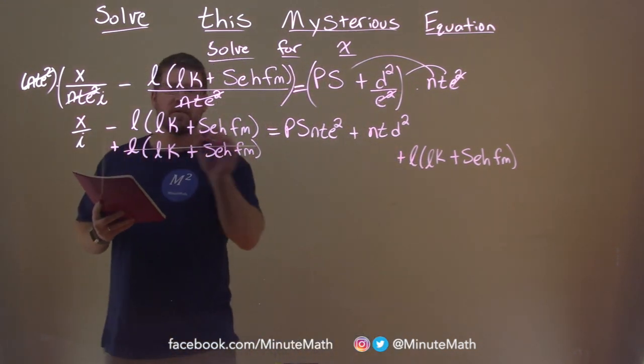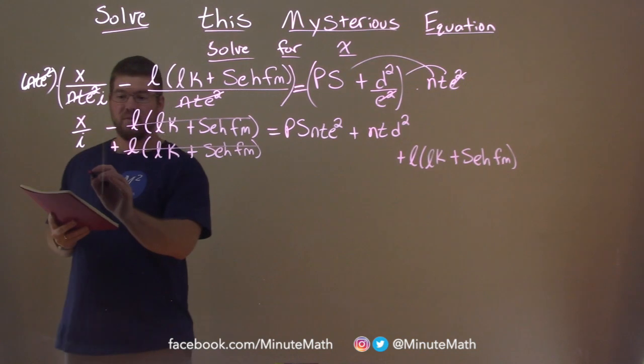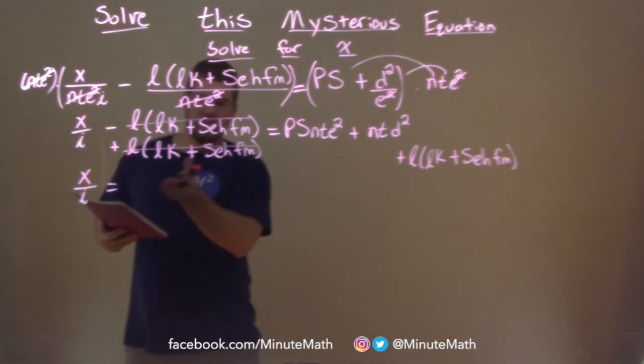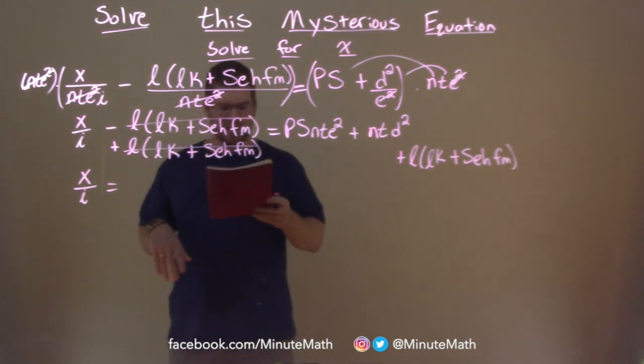What's nice here, this whole thing cancels. And we're left with just x over i here. And that's equal to, for space, I'm going to put the equal sign here. So we're going to write it all out. Nice and neat.